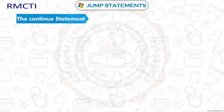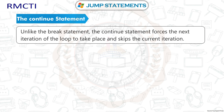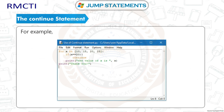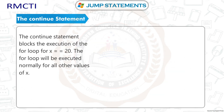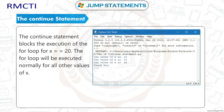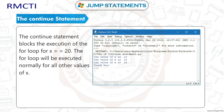The continue statement, unlike break, forces the next iteration of the loop to take place and skips the current iteration. The continue statement blocks execution of the for loop only when x == 20; the for loop executes normally for all other values of x.